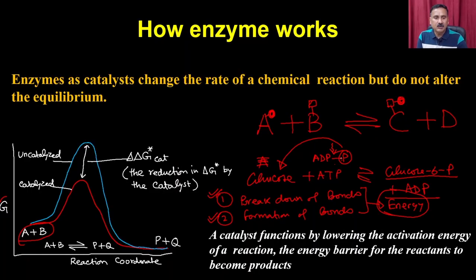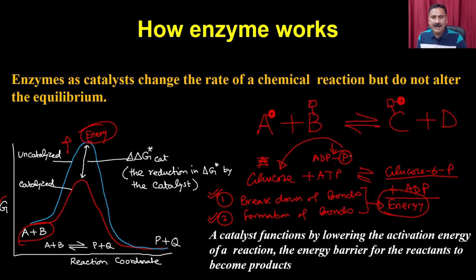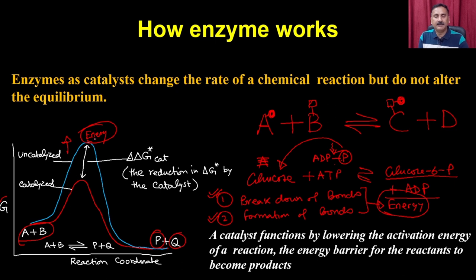If you plot the free energy associated with these molecules, you can see two conditions. In non-catalyzed reactions, all of this has to be done without the help of enzyme - A and B have to be heated in such a way that they actually cross this energy barrier. This is the energy barrier. Once you allow them to cross this energy barrier, the bond between phosphate and ADP is broken and the bond between glucose and phosphate is formed.